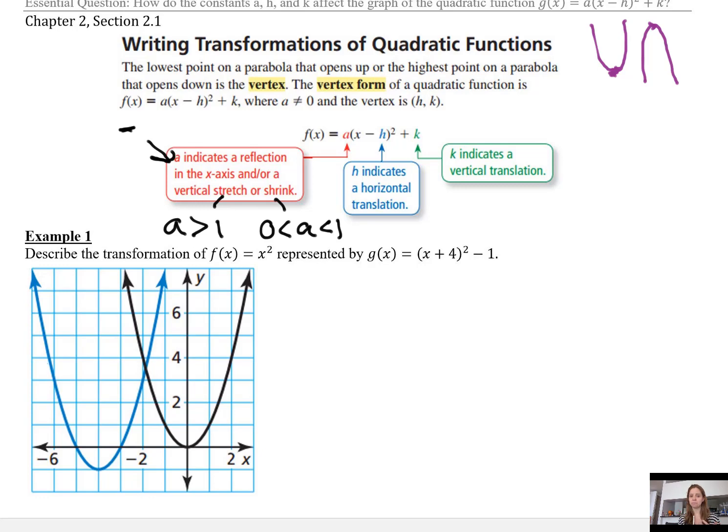Let's go right to Example 1. Describe the transformation of f(x) = x², that's the parent function of the quadratic family, represented by g(x) = (x + 4)² - 1. You probably already know what it is. I'm just going to, for the sake of practice, write this in vertex form. I'm going to rewrite this equation g(x), this function.